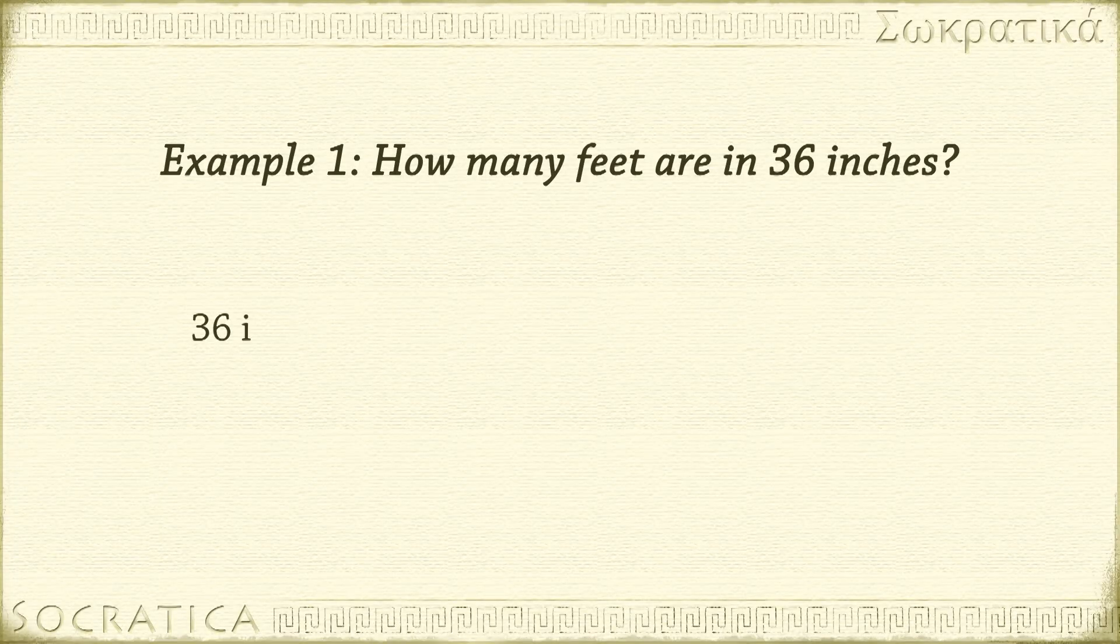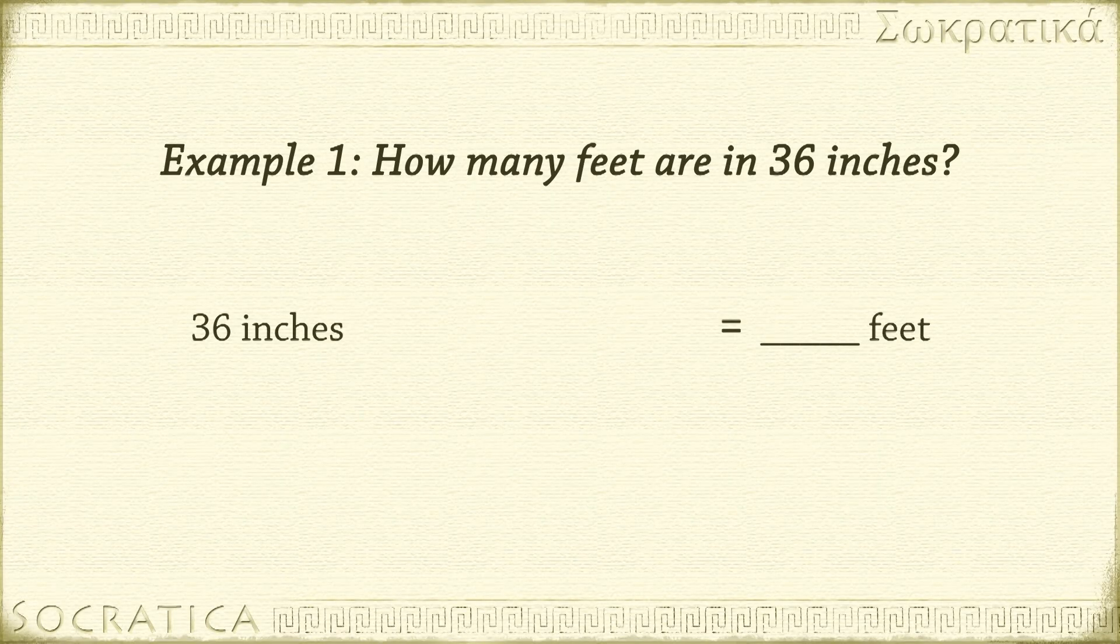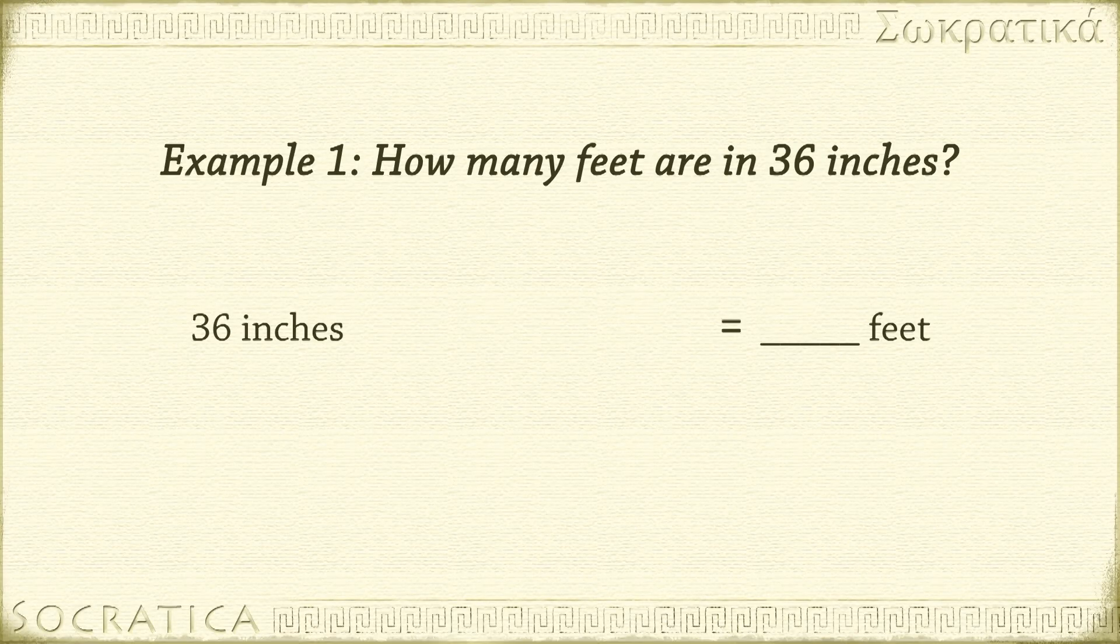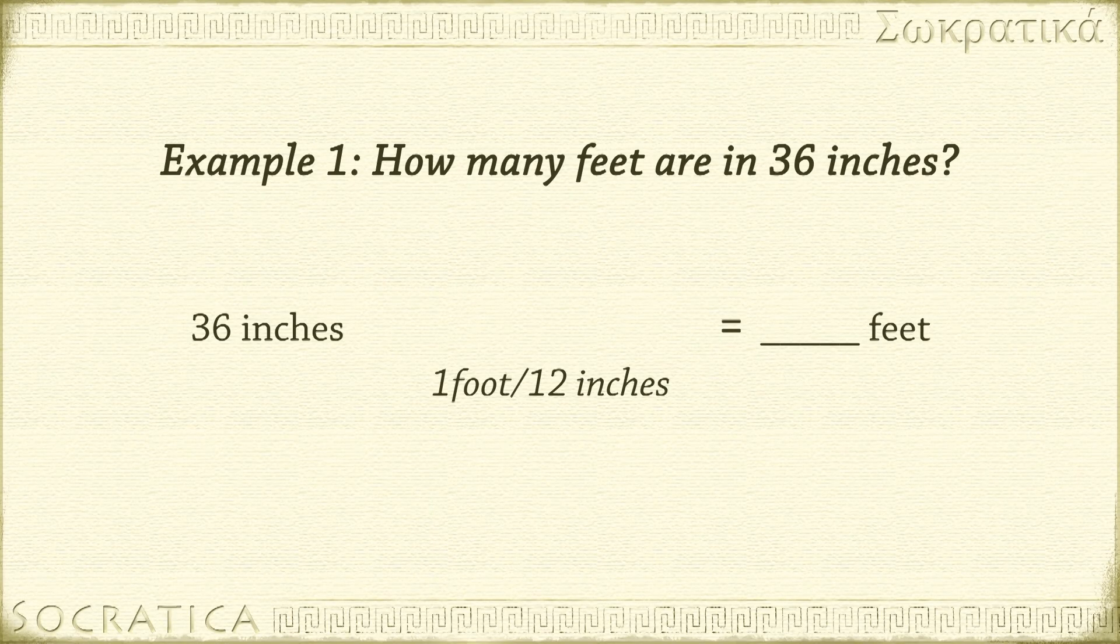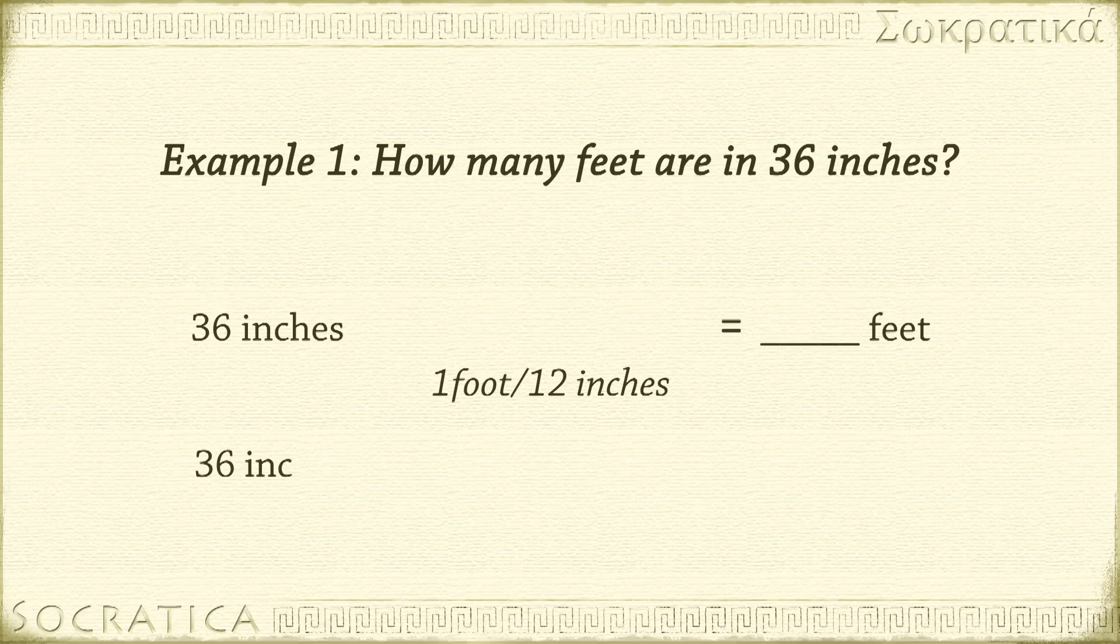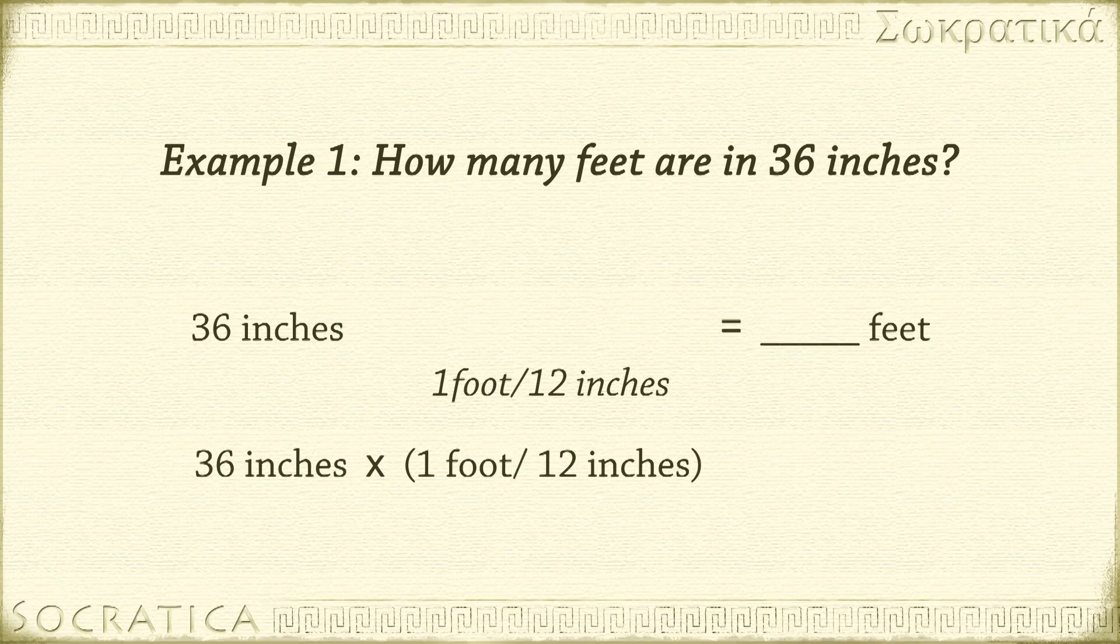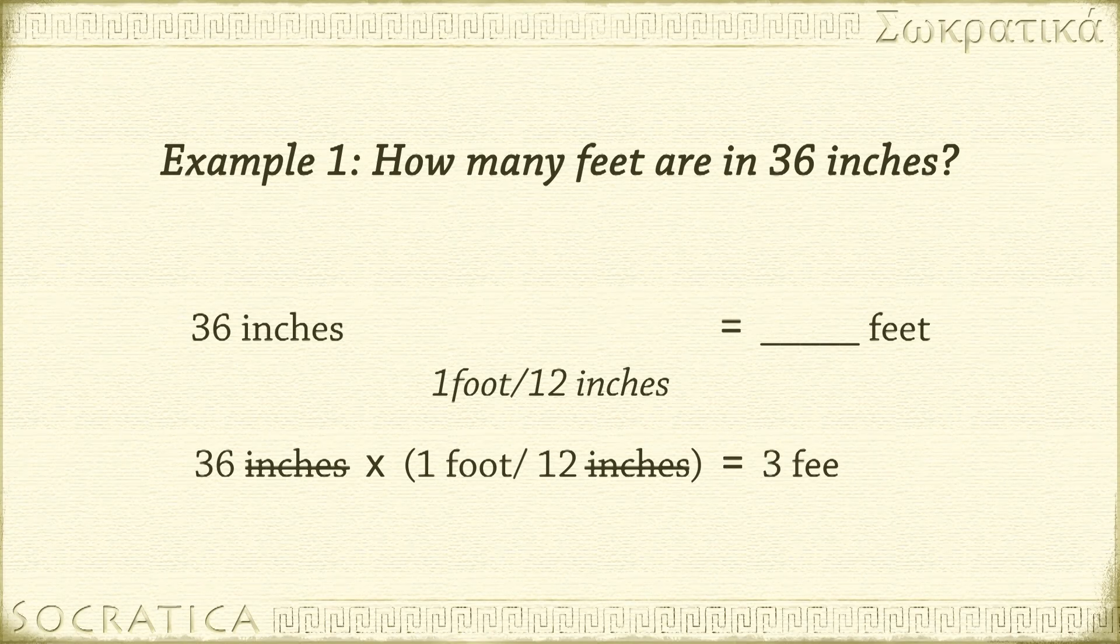Let's say I started with 36 inches, and I wanted to know how many feet that was. I know that 1 foot has 12 inches, so I can write that as a conversion factor: 1 foot over 12 inches. Now I can multiply these together, making sure my units cancel. 36 inches times 1 foot over 12 inches. Inches cancel. 36 divided by 12 equals 3 feet.